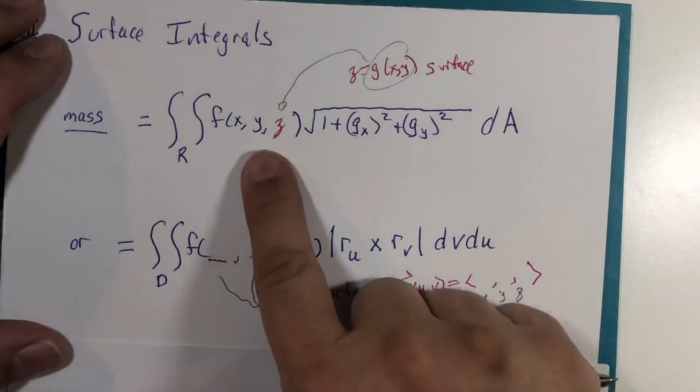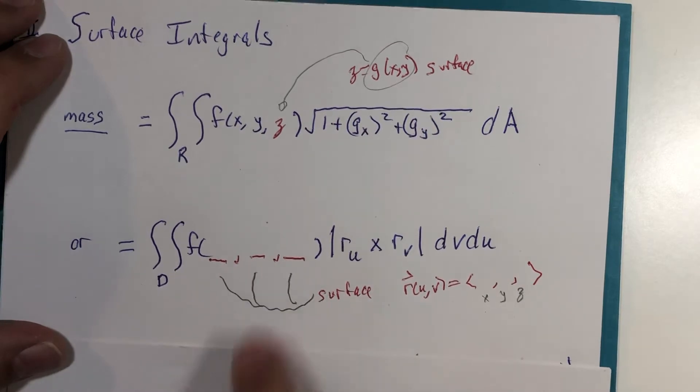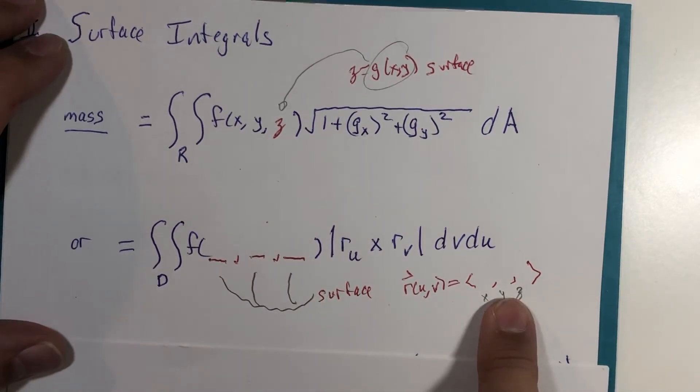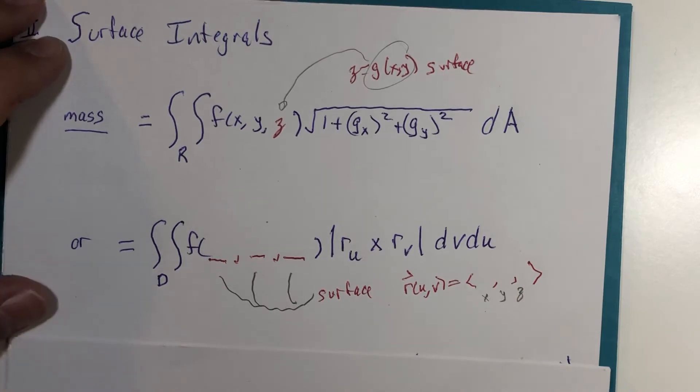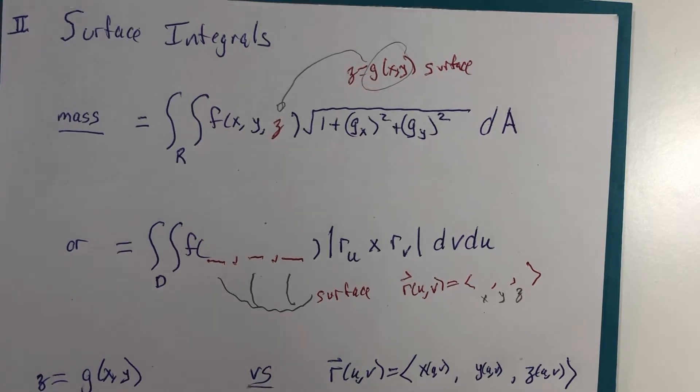We only care about the density on the surface itself, not other points in space. Now, I want to show you a little comparison of the two notations here.